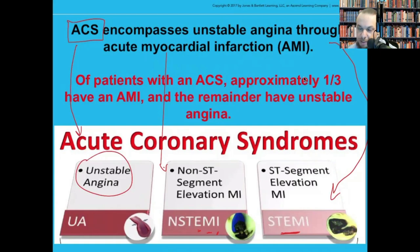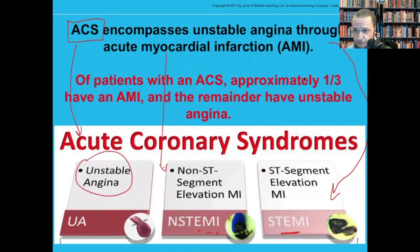Unstable angina is usually chest discomfort and pain brought on during rest, not really during physical exertion. Or, unstable angina may occur when a person who previously needed three flights of stairs to get chest pain now develops that pain after only one flight — his arterial narrowing has progressed, moving from stable to unstable angina. Unstable angina is brought on at rest and involves ischemic chest pain.